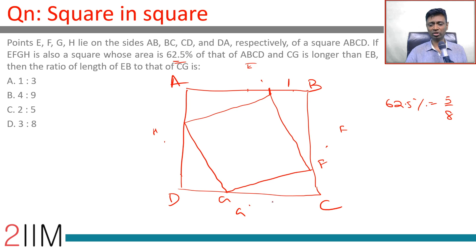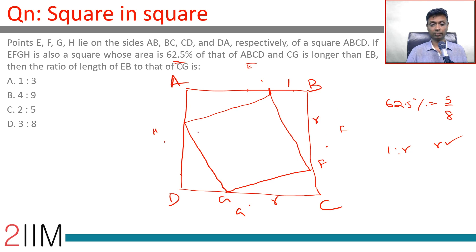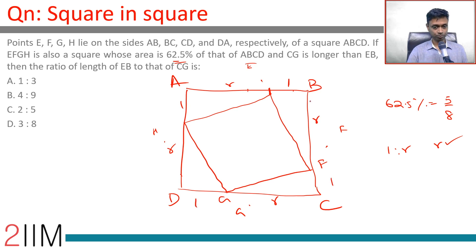If EB is 1 and CG is R, we want to find 1:R — we effectively want to find R. If this side is R, then by symmetry all the corresponding segments are also R and 1. We're talking about ratios, nothing more than that.